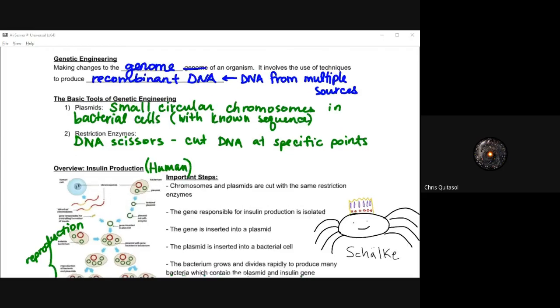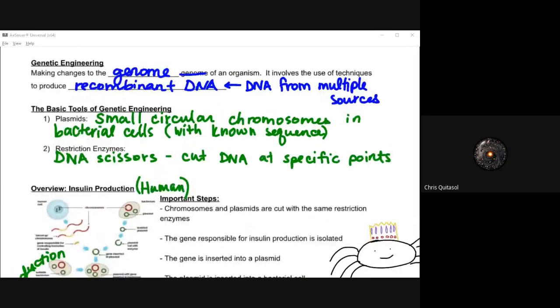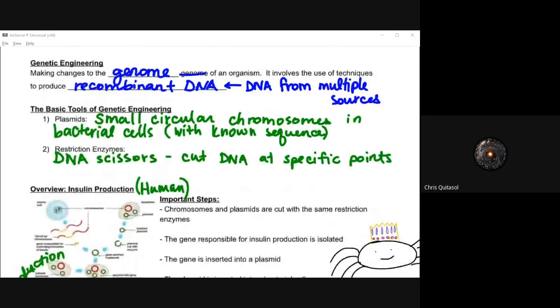If you recall from yesterday, we left off at genetic engineering and we were looking at the two components of genetic engineering: plasmids and restriction enzymes. Those help to form recombinant DNA, which is just the DNA chunk that has multiple sources integrated into it.